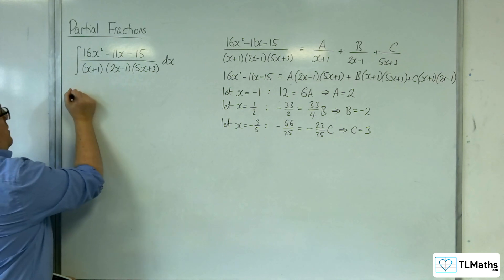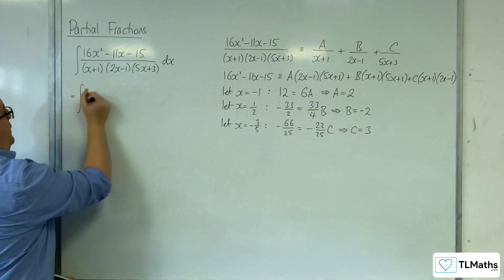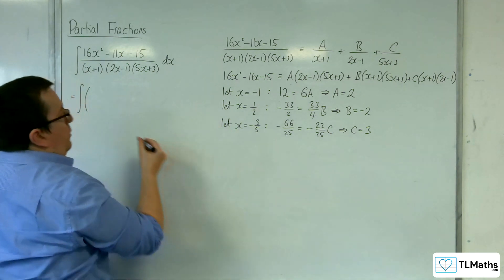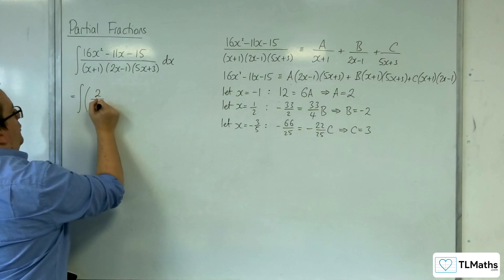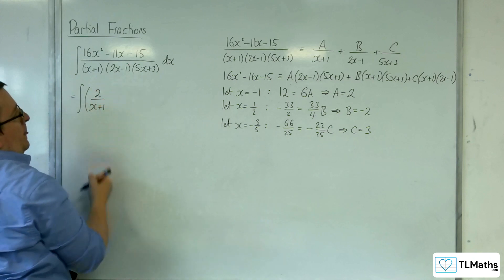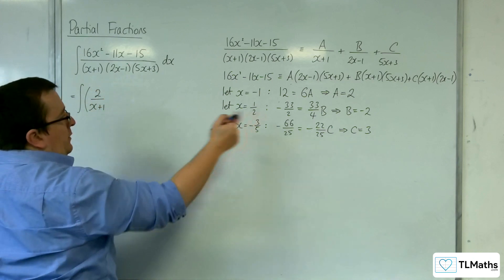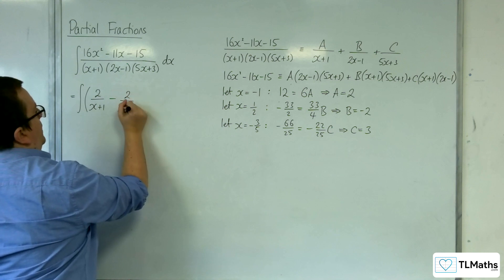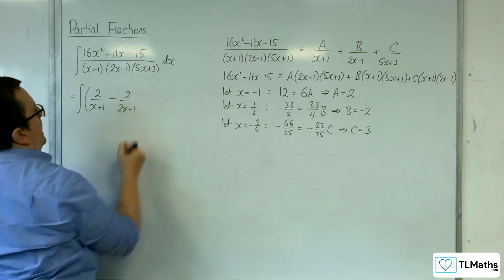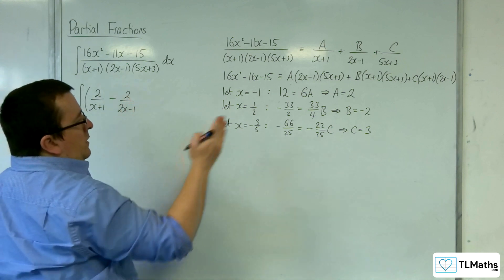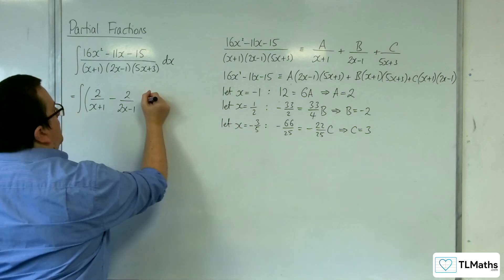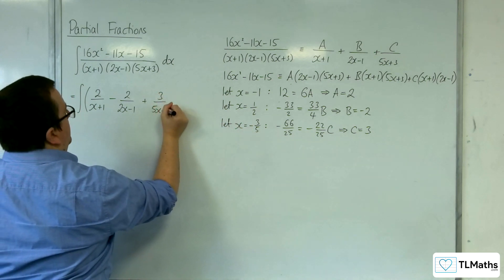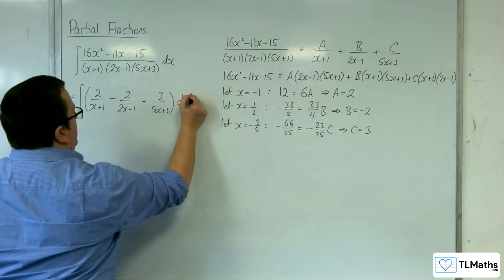So I can now write this integral as the integral of 2 over x plus 1, take away 2 over 2x minus 1, plus 3 over 5x plus 3, dx.